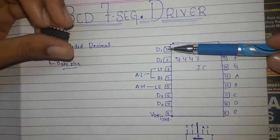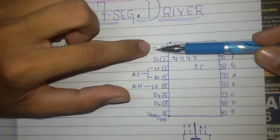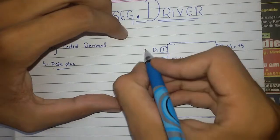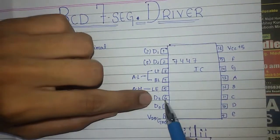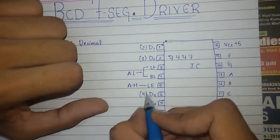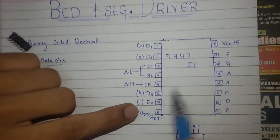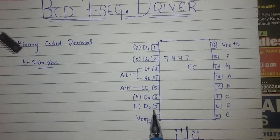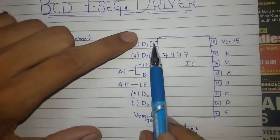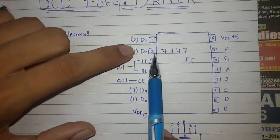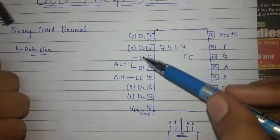The data pins are listed in this way: pin 1 and pin 2 are the second and third inputs. Pin 6 and pin 7 handle the fourth and first inputs respectively. So pin 7 is your first input, pin 6 is your fourth input, pin 1 is your second input, and pin 2 is your third input.